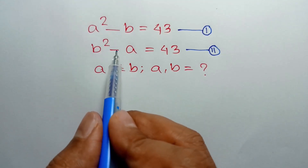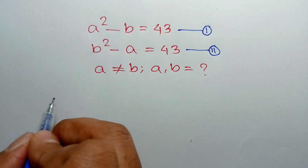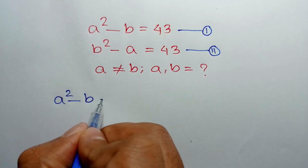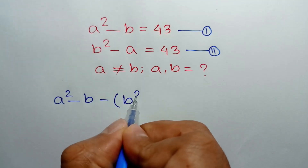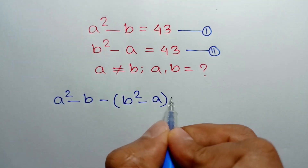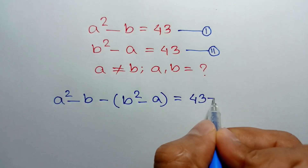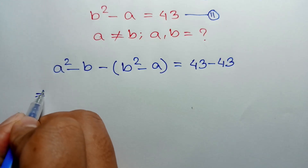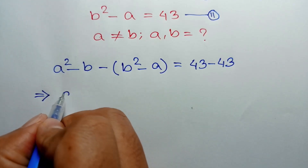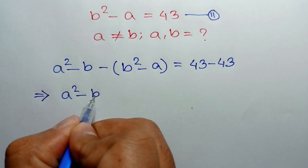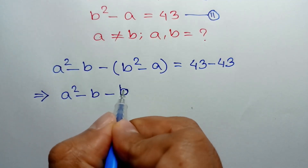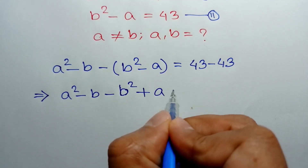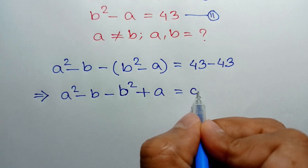Subtracting equation 2 from equation 1, we can write A squared minus B, minus of B squared minus A, is equal to 43 minus 43. Simplifying, we get A squared minus B minus B squared plus A equals 43 minus 43, which is 0.